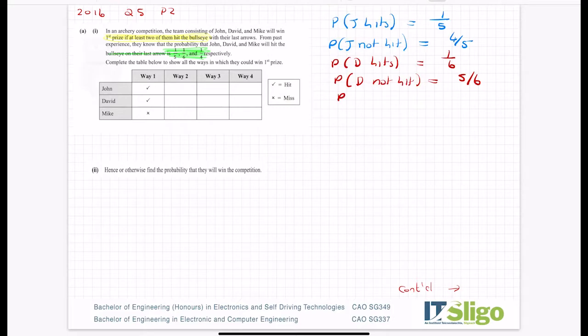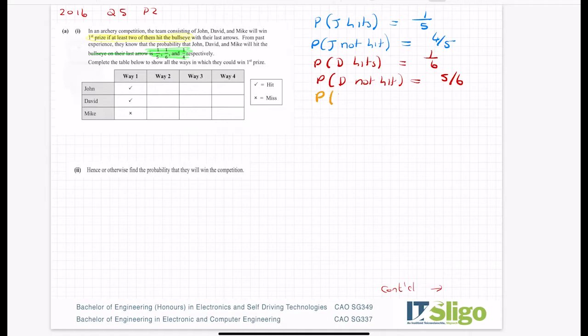The probability that Mike hits is a fourth. The probability that Mike not hit is three-quarters. Okay, so that's me setting up the question for the hit or they don't hit.